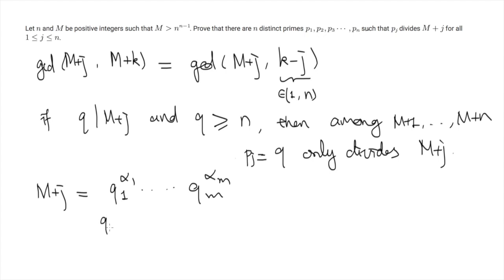And all these Qis are smaller than n. In particular, this means that there are at most n minus 1 terms in the prime factorization of M plus J. But now remember that M is very large. M is larger than n to the power n minus 1.